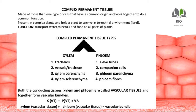Both xylem and phloem are conducting tissues. Just as in our body transportation takes place through the heart and blood vessels, in plants the transportation of water and food takes place through xylem and phloem — that is why they are called vascular tissue. Together, xylem and phloem are called a vascular bundle, which you can see in the diagram.